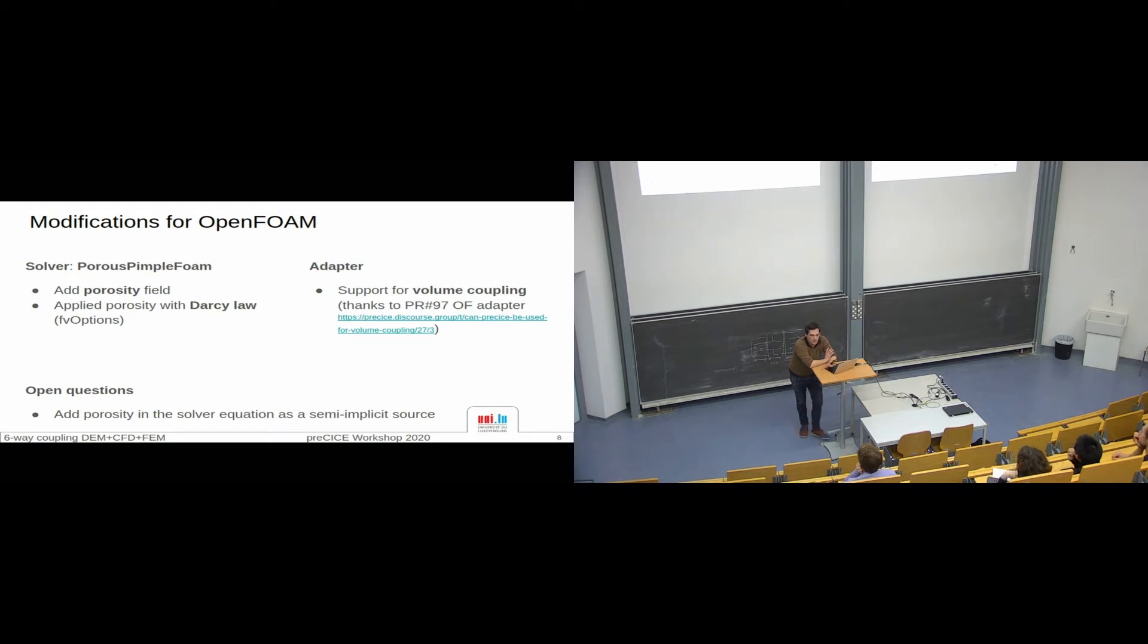It seems to work, so the pull request can be merged. An open question is we add the porosity in the solver equation as a semi-implicit source. Maybe there is another way to do. We are not really sure, but at least this function works properly.